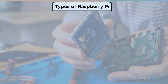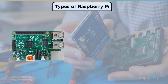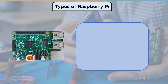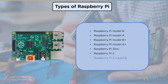The different types of Raspberry Pi are: Raspberry Pi Model B, Model A, Model B Plus, Model A Plus, Raspberry Pi Zero, Raspberry Pi 2 Model B, and Raspberry Pi Zero W.